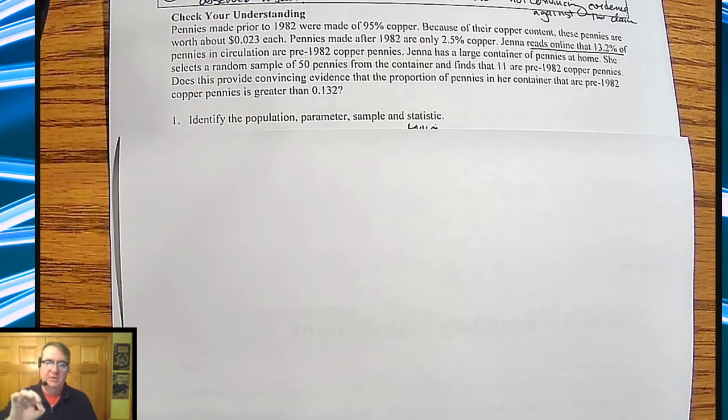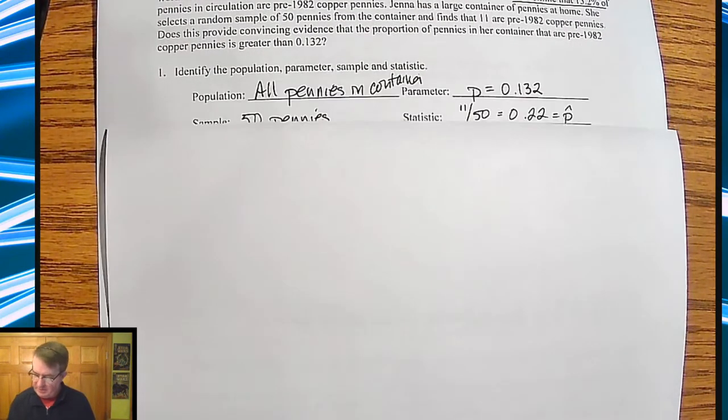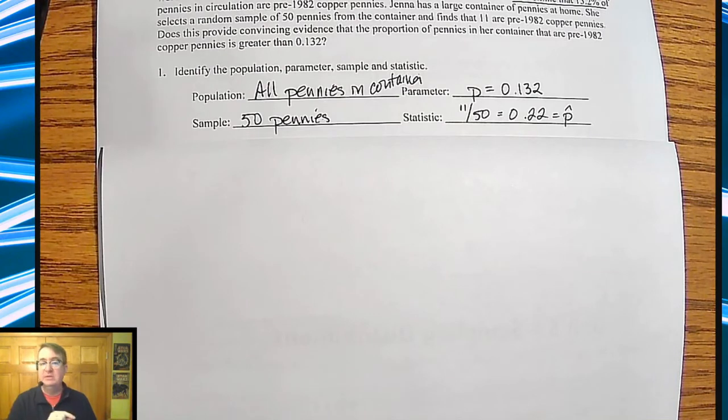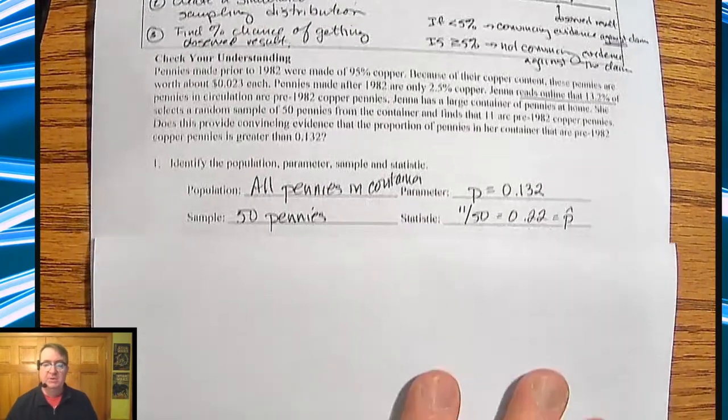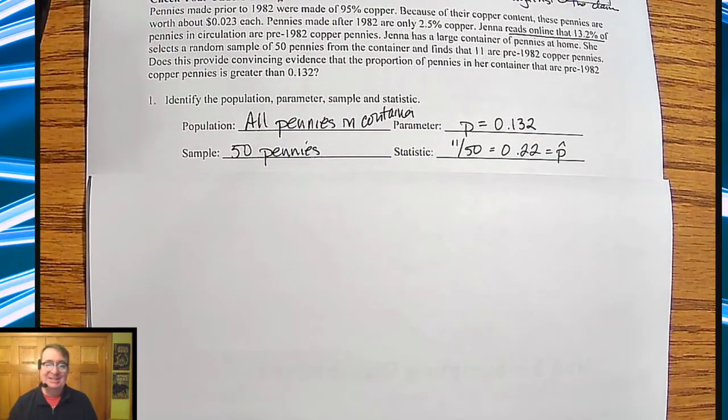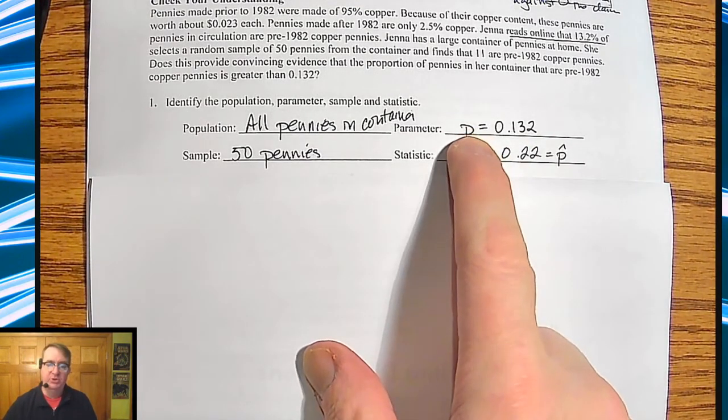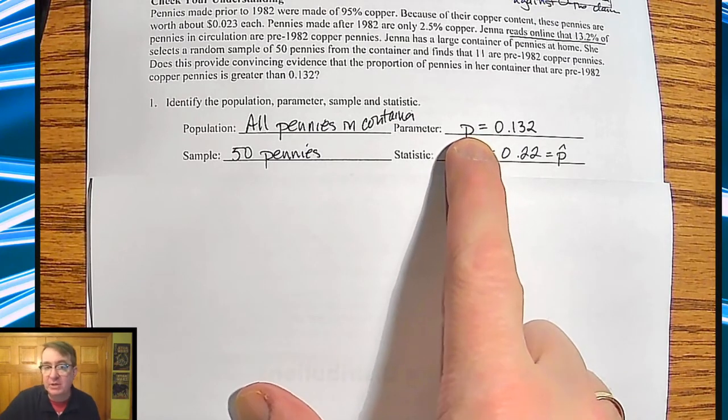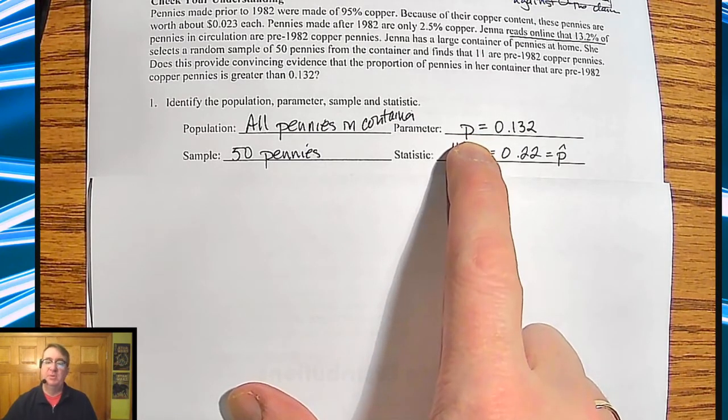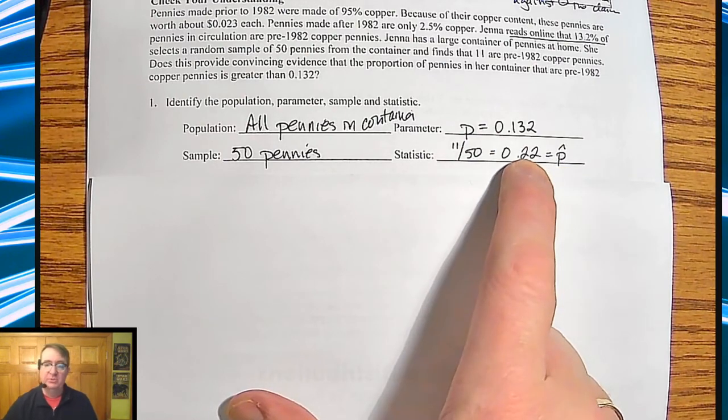You're going to need to be very specific with how things are laid out. The population is all the pennies in the container. The sample is the 50 pennies that Jenna pulled in this case. The parameter, we are assuming nothing has changed. So we're going to assume that her container is much like what we're seeing out in the real world. It's going to be p = 0.132. And the statistic is 11 divided by 50, she got 22%. This is your proportion because we're talking about percentages of the population. P hat, which is my sample, is 0.22.